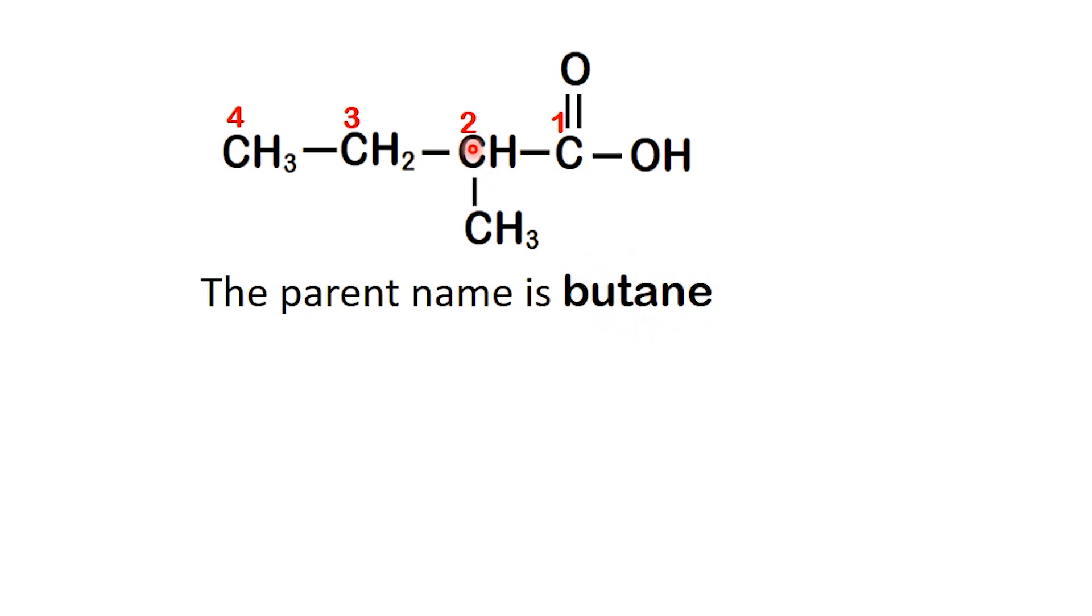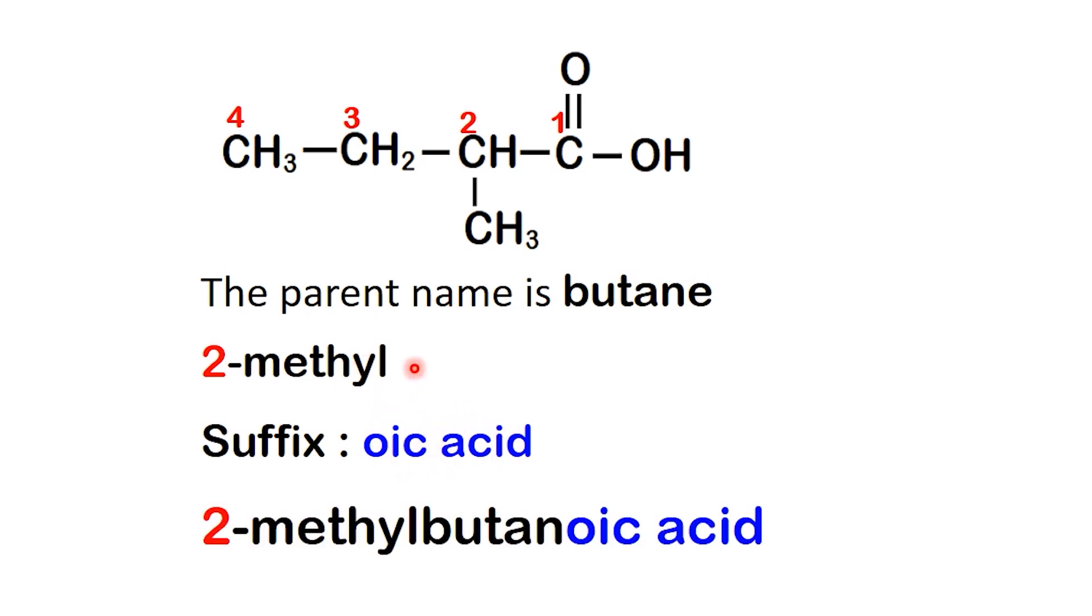On carbon 2, we see a methyl group. Replacing the E with oic acid and adding the substituent, the name becomes 2-methylbutanoic acid.